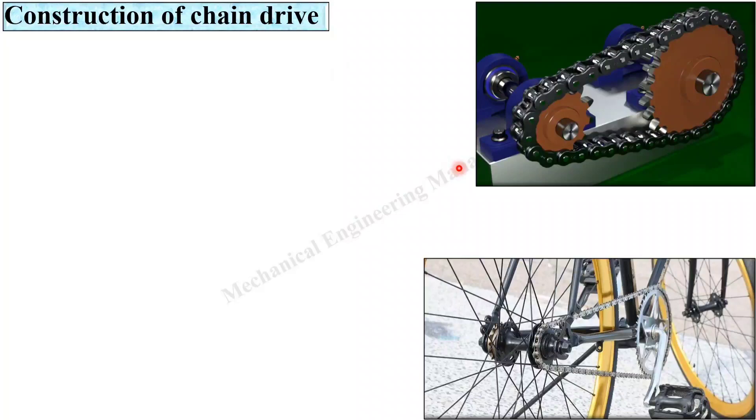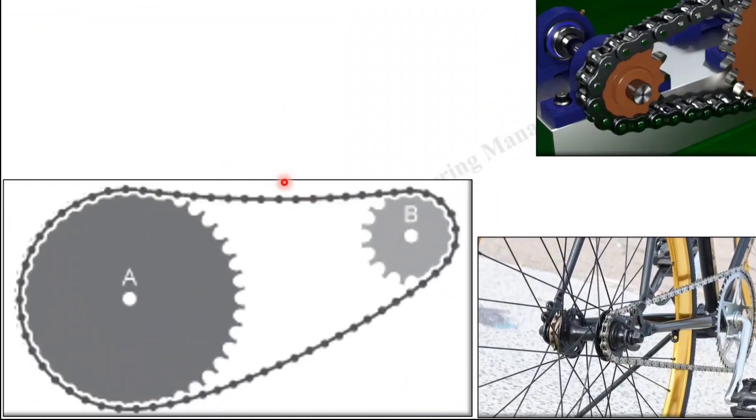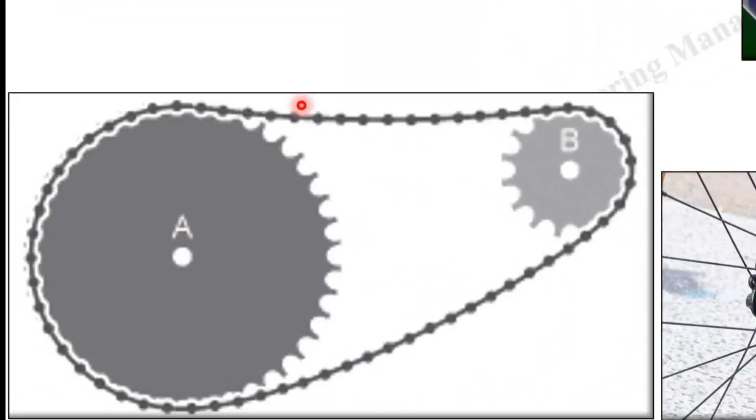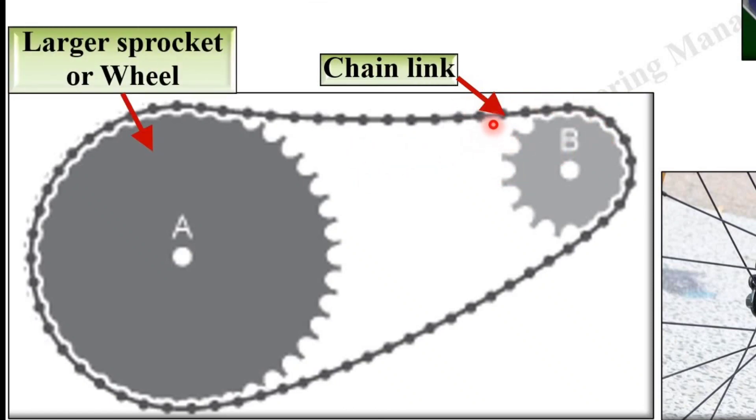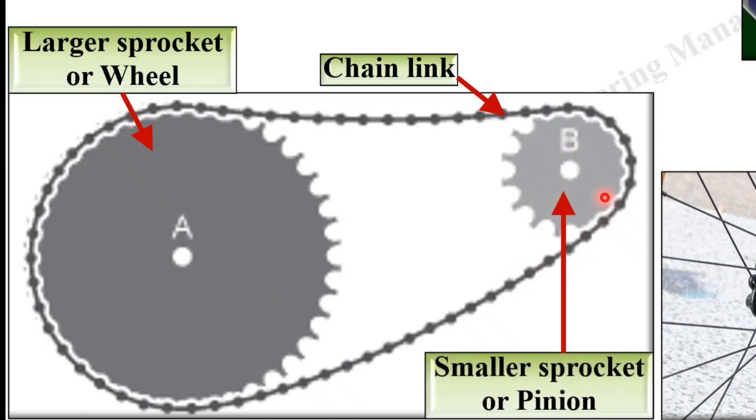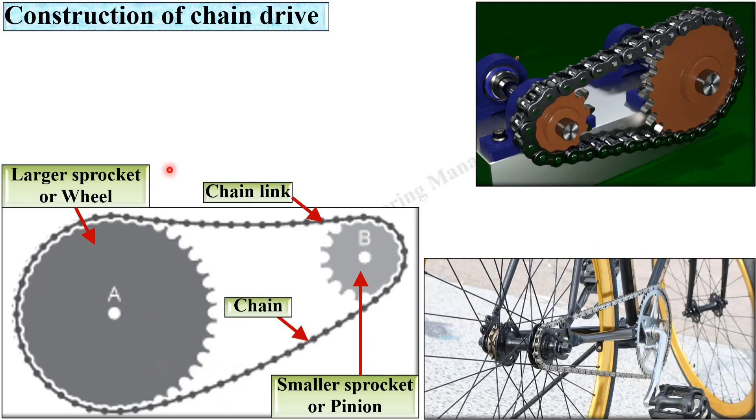Next one, construction of the chain drive. This is a very simple figure. This is the chain, this is the larger sprocket or wheel, this is the smaller sprocket also known as the pinion. This is the chain having a number of rigid links joined together and making a loop.